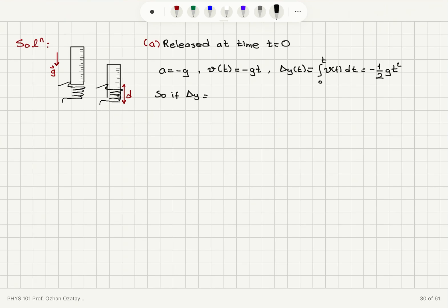So delta y of minus d, that implies that it has fallen down a distance. Minus d is equal to minus 1 over 2 gt squared.